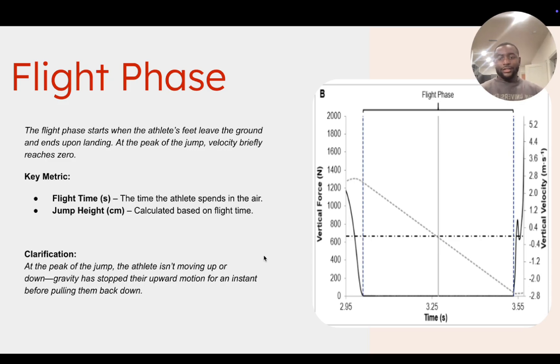So flight phase starts when athlete's feet leaves the ground and ends upon landing. And at the peak of the jump, velocity briefly reaches zero. So that'll be this point right here, as you can see. So that's velocity going up, athlete leaves the plate, velocity is obviously coming on the way down because how gravity works on the body. This point right here will be the peak of the jump. So that's where you get your flight time from, your jump height, different things like that. So for example, that's like if you take a ball and throw it up as high as you can, it's going to continue to rise until there's a point that it just can't anymore. Then it has a brief stop point that obviously you won't be able to see with the naked eye, but as a brief stop point, then it starts to decelerate down quickly.